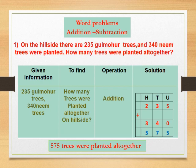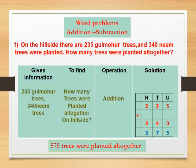335 Gulmohar trees and 340 Neem trees were planted. How many trees were planted all together? एका रोपवाटिकेत 235 गुल्मोहराची झाडे, 340 कडुनिम्बाची झाडे लावली. तर दोन्ही मिळून एकूण किती झाडे रोपवाटिकेत लावली? To solve this sum, we first write given information, then to find, operation, and solution.